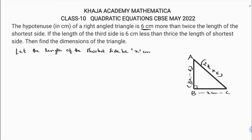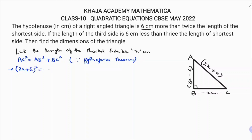This problem is based on Pythagoras theorem, so I will apply Pythagoras theorem for triangle ABC: AC² = AB² + BC². Substituting, (2x + 6)² = (3x − 6)² + x².